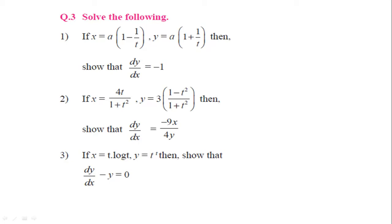See the first example. If x is equal to a into bracket 1 minus 1 upon t, and y is equal to a into 1 plus 1 upon t, then show that dy by dx is equal to minus 1. Here, two parametric functions are given: x in terms of t and y in terms of t, where a is constant. We have to find dy by dx and show it equals minus 1.